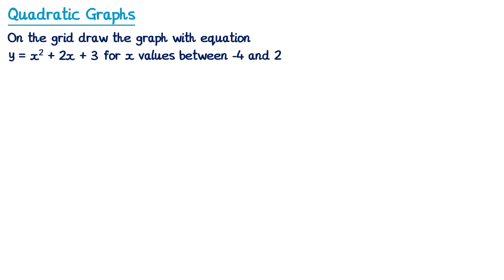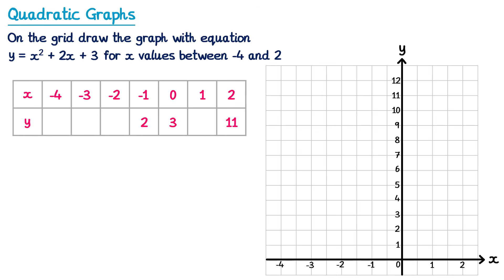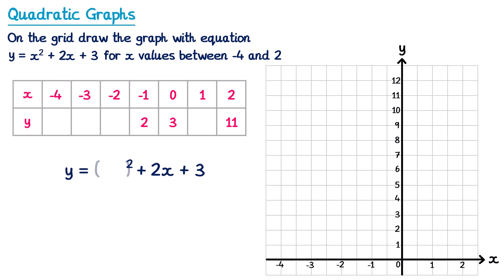Usually the first part of this question will involve completing a table of values. Often some of those values are already completed for you and we just need to fill in the rest. To complete the table we're going to use this equation. The way I like to do this is to write out the equation again but replace all of the x's with brackets, so the x squared becomes bracket squared and the 2x becomes 2 bracket. Then we substitute in the x values to get the corresponding y values.